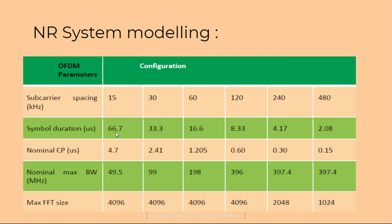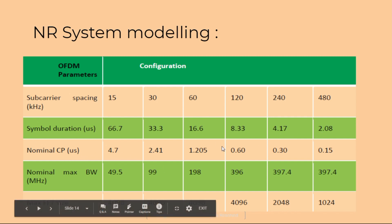The corresponding symbol durations are 66.7, 33.3, 16.68, 4, and 2 microseconds. The normal cyclic prefix durations are 4.7, 2.41, 1.2, 0.61 microseconds, and so on for the higher sub-carrier spacings.